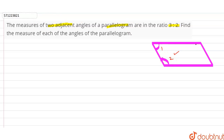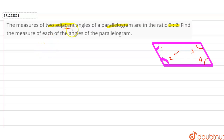In this question, we have a parallelogram. Let's say this is angle 1, this is angle 2, this is angle 3, and this is angle 4. Two adjacent angles means angles that share a common arm. For example, angle 1 and angle 2 are adjacent, angle 2 and angle 4 are adjacent, angle 4 and angle 3 are adjacent, and angle 1 and angle 3 are adjacent angles. It is given that the two adjacent angles are in the ratio 3:2.